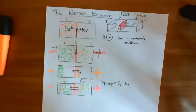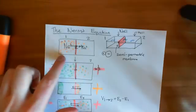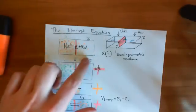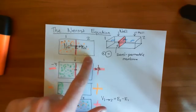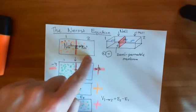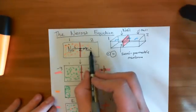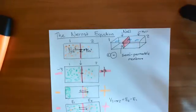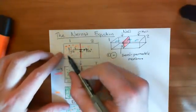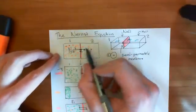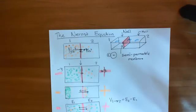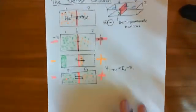To summarise the process: you start off with different concentrations of sodium on either side. The concentration gradient causes more sodium to move from compartment one to compartment two than in the reverse direction, creating a net movement of sodium ions into compartment two. That makes compartment one negatively charged and compartment two positively charged. As you move more and more sodium ions into compartment two, the electrical potential difference between the compartments grows, until the repulsion of the electrical force is great enough to balance the concentration gradient, and the number moving in either direction becomes equal — equilibrium.